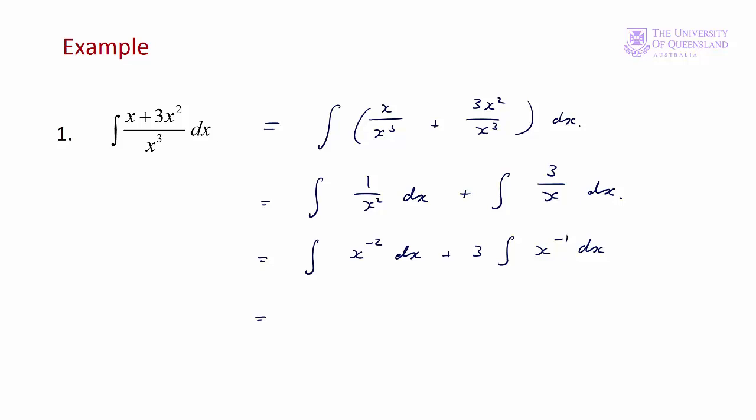This equals - we add 1 to the exponent: -2 + 1, that's -1. We divide by that new exponent, giving -1/x, plus 3 times the integral of x^(-1) dx.